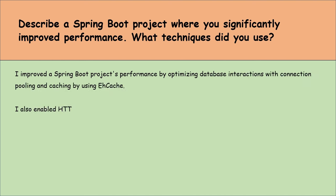Describe how to implement security in a microservices architecture using Spring Boot and Spring Security. Add Spring Security to each microservice for authentication and authorization. Create a central authentication service that issues tokens like JWT when users log in. Ensure each microservice checks these tokens to allow only authorized users in. Use SSL/TLS for secure communication. Implement an API gateway to manage security checks and route requests.